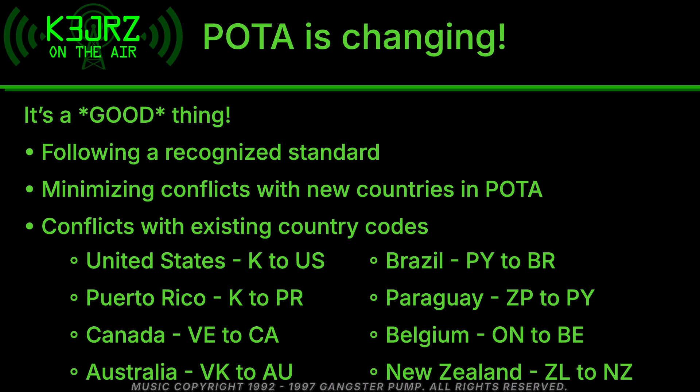Instead of using call sign prefixes, Parks on the Air has made the smart choice of using an internationally recognized standard. It minimizes conflicts with new countries added to the program. So US parks, which started with K, will now use US. Puerto Rico, which was K, will switch to PR. Canada was VE, switching to CA. Australia was VK, switching to AU. Brazil was PY, switching to BR. Paraguay was ZP, switching to PY. Belgium was ON, switching to BE. And New Zealand was ZL, switching to NZ. You can see the conflict between Canada and Venezuela, and between Brazil and Paraguay — this change resolves those conflicts.